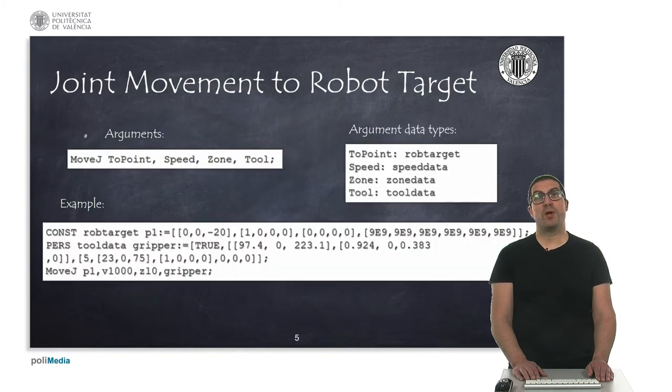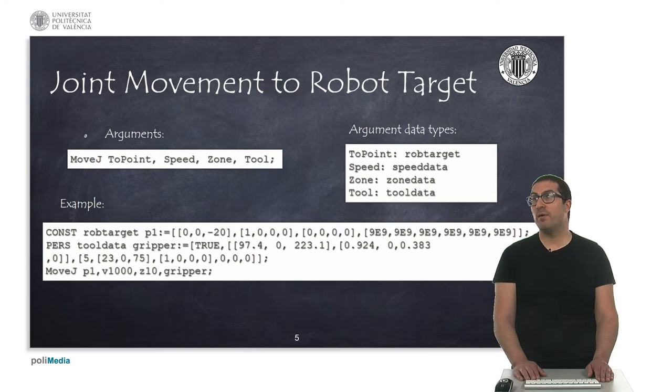The MoveJ instruction also performs non-linear movement, but the difference with respect to MoveAbsJ is that now the point to move is not a joint target, but a robot target data type containing position and orientation of a given point. Therefore, the robot solves the inverse kinematics internally. The remainder of arguments are identical, so we need to specify the speed, the zone, and the tool to use.